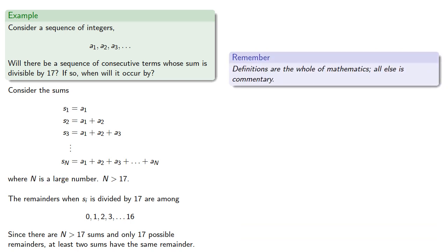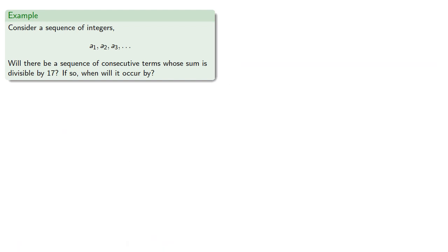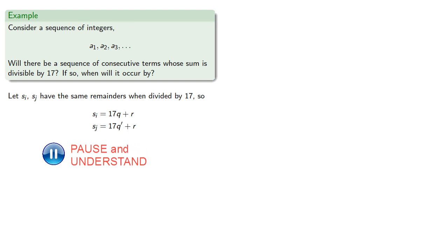So remember, definitions are the whole of mathematics, all else is commentary. We're saying that two sums have the same remainder. What does that mean? Well it means our two sums are 17 times a quotient plus a remainder, and 17 times a different quotient plus the same remainder.